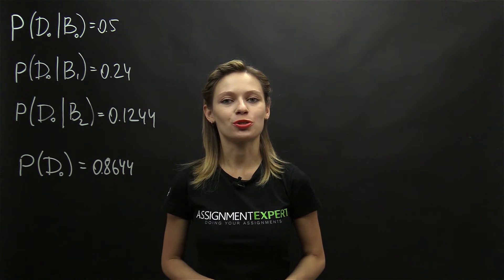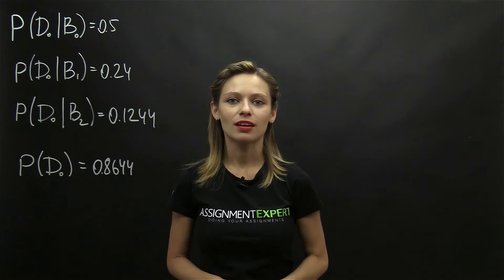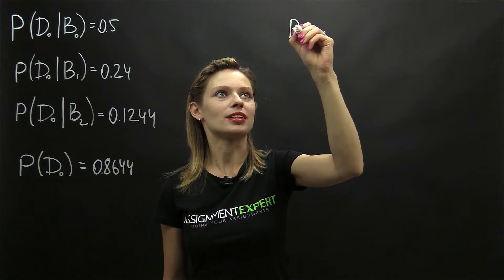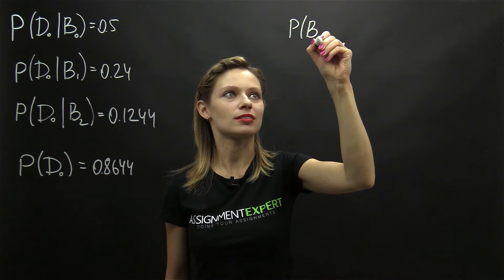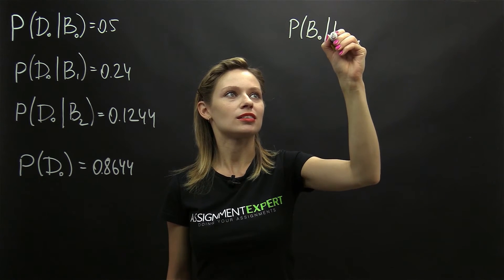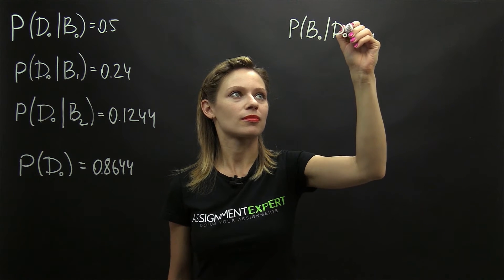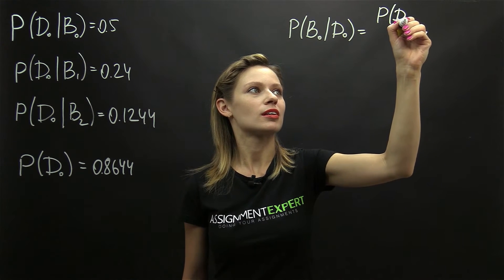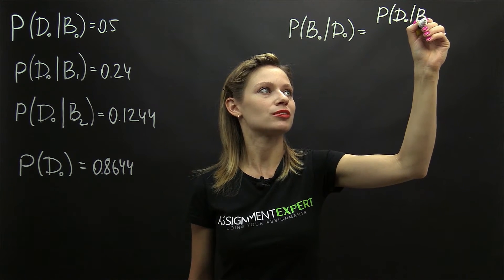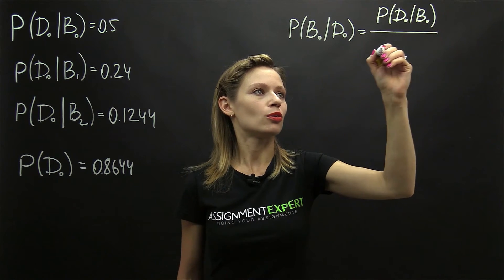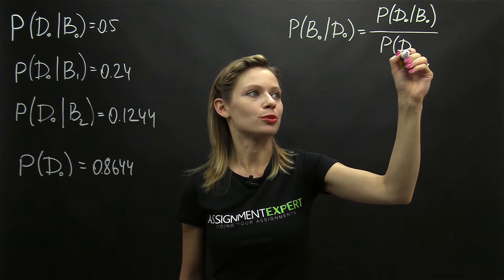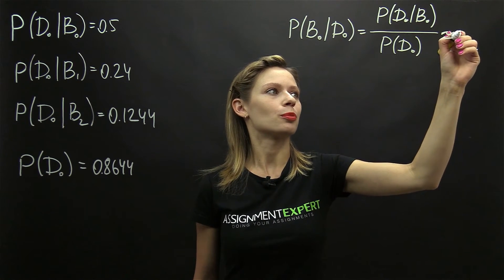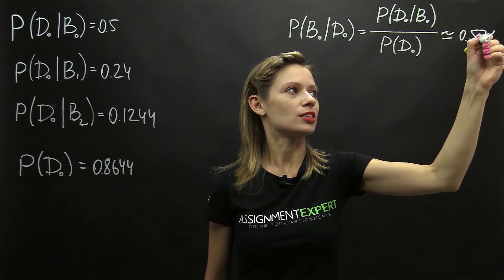To answer the question, we'll use the general conditional probability formula. The probability of the event that the batch with no defective components was selected, given that neither of the selected components was defective, is equal to the probability of selecting two non-defective components given the batch was with no defective components, over the total probability of selecting two non-defective components, and that is approximately equal to 0.5784.